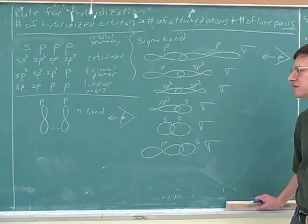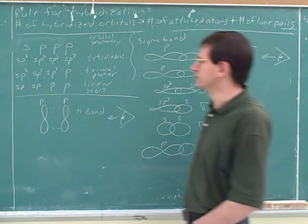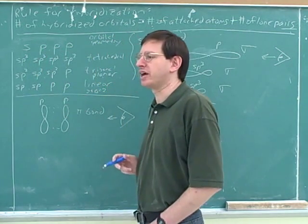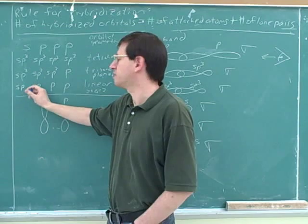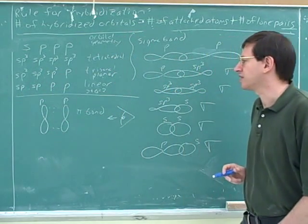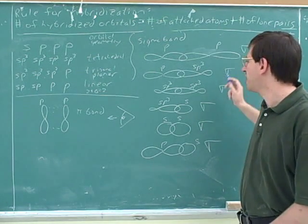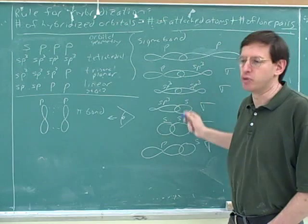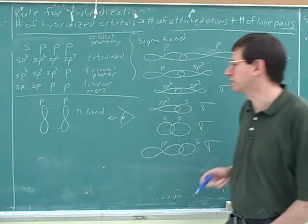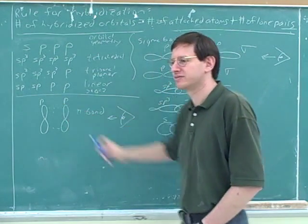So we've learned about three different types of things, which students tend to get confused. We've learned about unhybridized orbitals. S and p are unhybridized orbitals. And we've learned about hybridized orbitals, like sp3, sp2, and sp. Those are hybridized orbitals. And now we've learned about a third thing, which are bonds, sigma bonds and pi bonds. Sigma bonds and pi bonds are made out of the overlap of orbitals. Bonds are made out of the overlap of orbitals, but they're not the same thing. So we wouldn't want to call this a p-bond, it's a pi bond. We wouldn't want to call this a pi-orbital, it's a p-orbital.